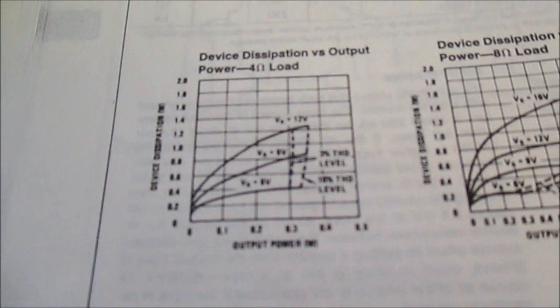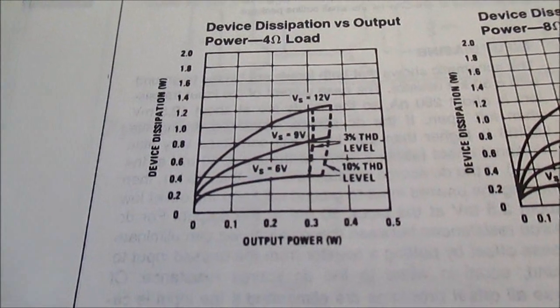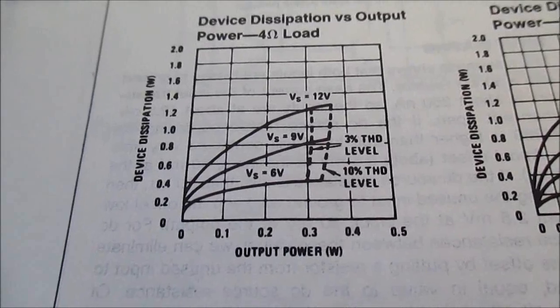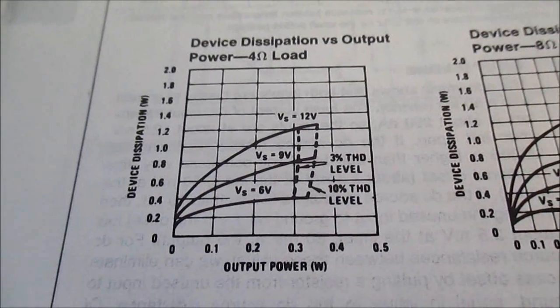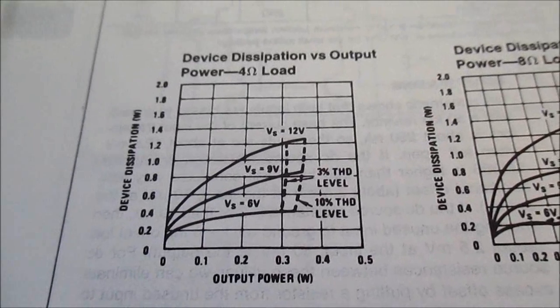But as you see here, it doesn't really go up at all. Just a sliver, but that tells you right there that the amplifier cannot handle 4 ohm loads. Don't even monkey with 4 ohm loads.